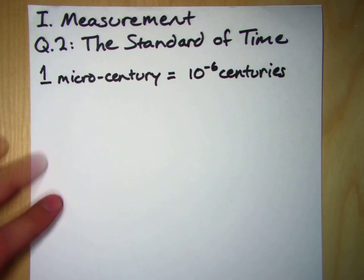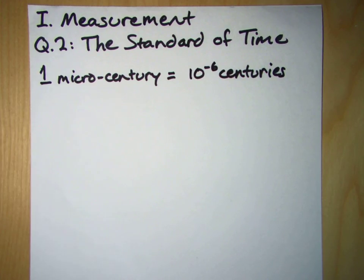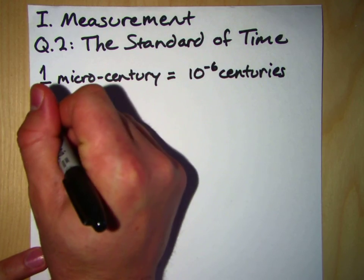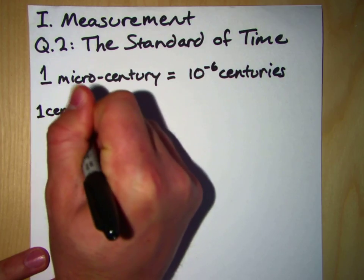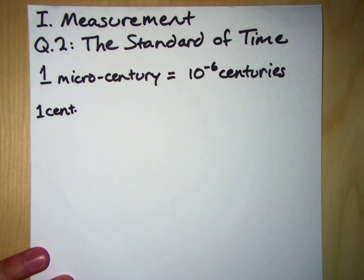So we want to find out how many minutes this is, but I say we start with just century. We all know what a century is. Let's see how many minutes are in a century first. So we know that one century, and I'll abbreviate it as cent, is a hundred years.